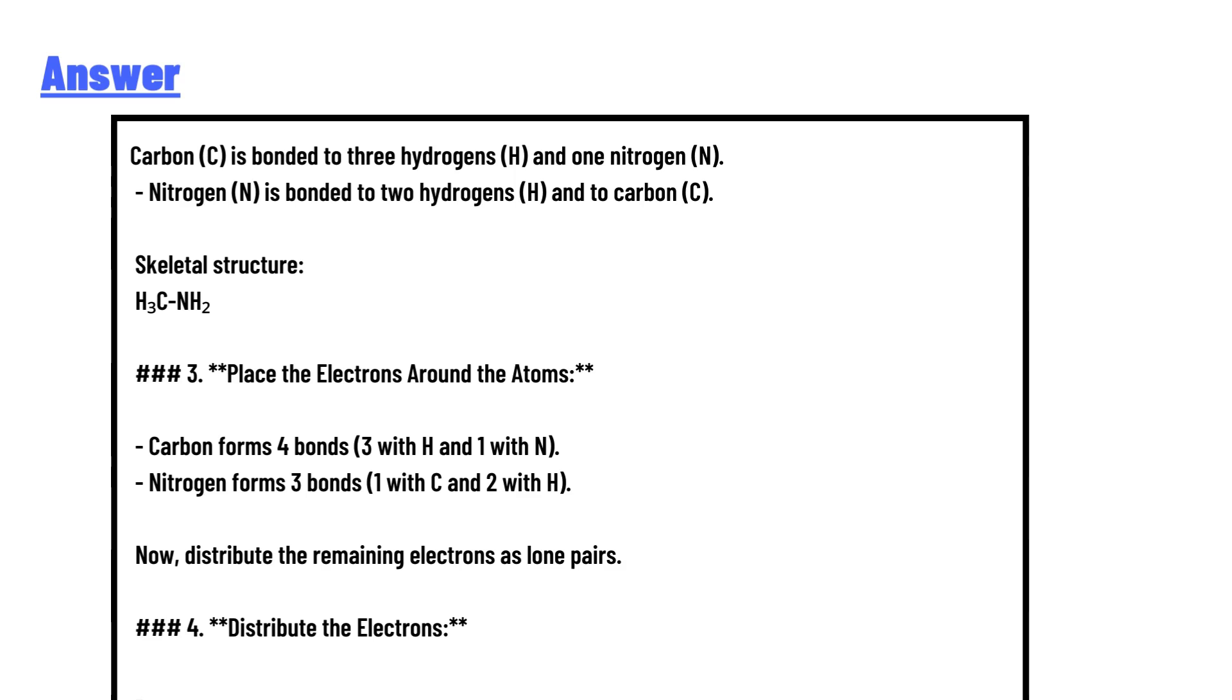Step 3: Place electrons around the atoms. Carbon forms 4 bonds: 3 with H and 1 with N. Nitrogen forms 3 bonds: 1 with C and 2 with H.